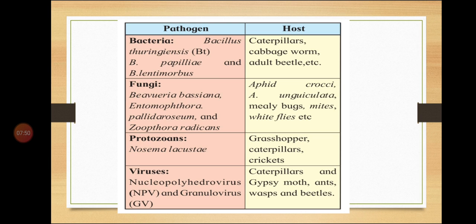You need to remember this table for your exams — at least one pathogen and one host in each category. For example: bacteria — Bacillus thuringiensis, host caterpillar; fungi — Beauveria bassiana, host aphid; protozoan — Nosema locustae, host caterpillar; virus — nucleopolyhedrovirus, host caterpillar. Three of the four categories share caterpillar as a common host, which makes it easier to remember.